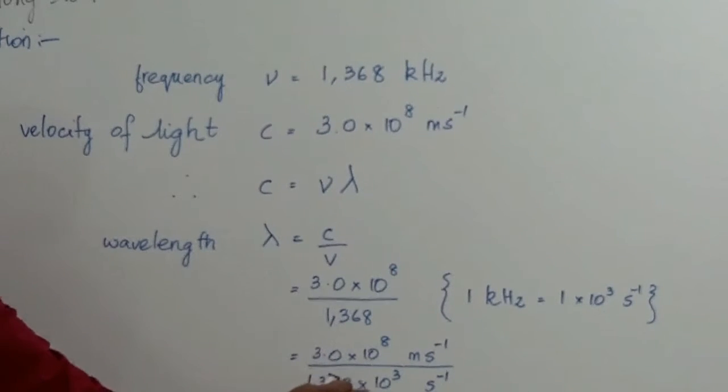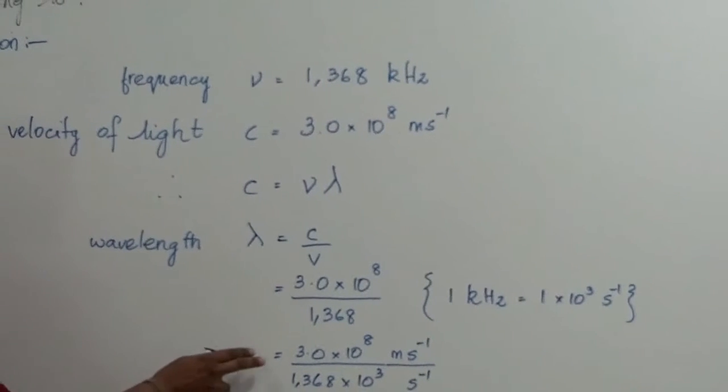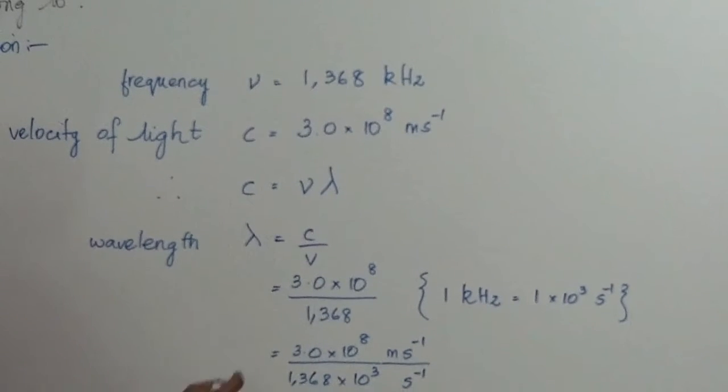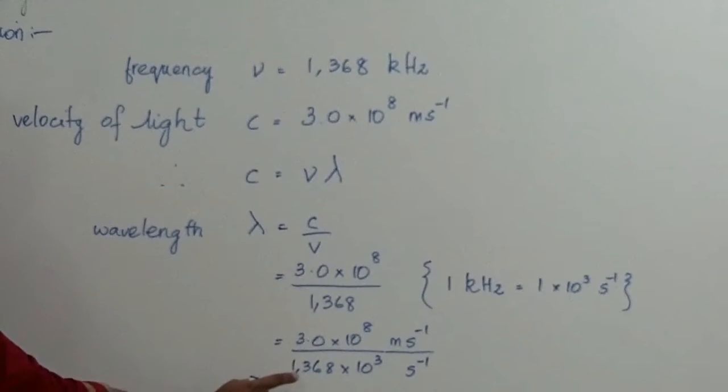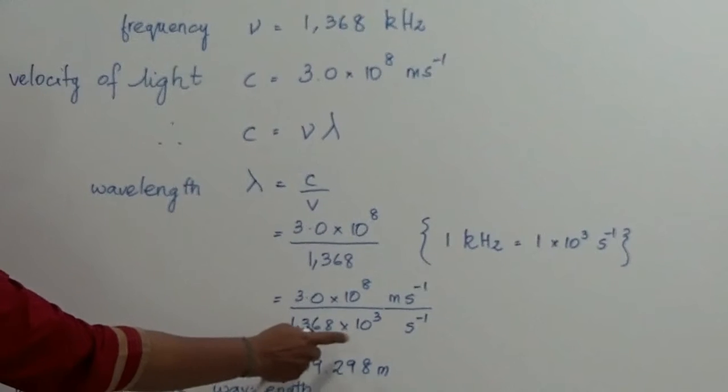So, we substitute that into the formula and what we get is 3.0 times 10 to the power of 8 divided by 1368 times 10 to the power of 3.